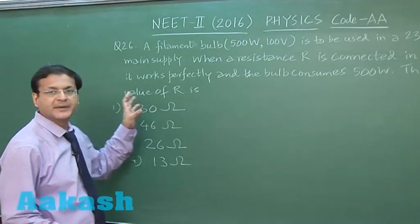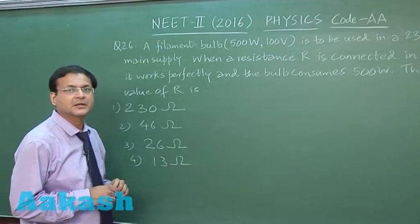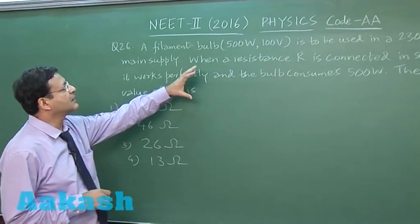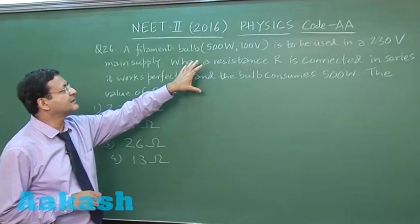Now, this question 26 is based on heating or thermal effects of current. Here they are saying you have a filament bulb rating of the bulb has been given 500 watt and 100 volts.